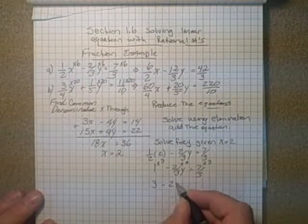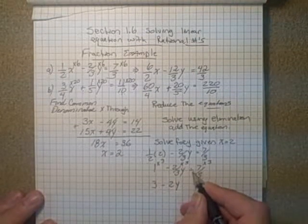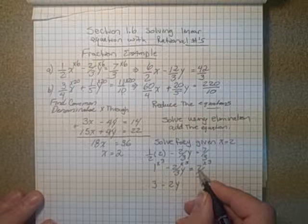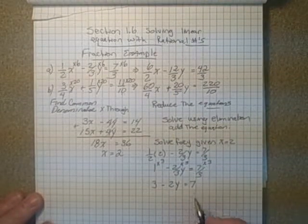So this would be 3, minus 6 over 3, which would be negative 2y, and this would be equal to 7 times 3, 21 over 3, which is equal to 7.